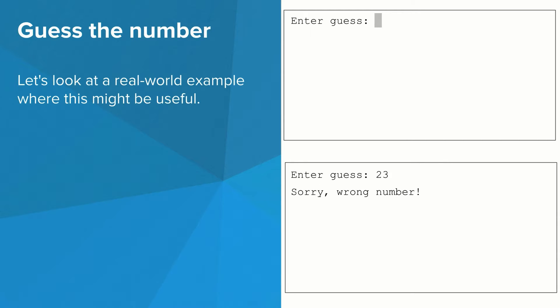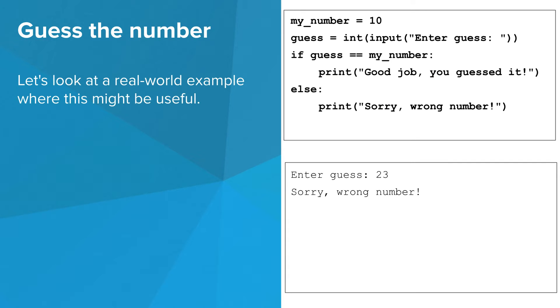Let's look at an actual program where that might be useful. Imagine you wrote a program that allows someone to try to guess a number. If they guess incorrectly, they don't get to try again. At the top on the right, you can see what the code for this program might look like.